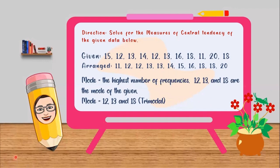Next, let's find out the mode. Mode is the highest frequency. In an arranged data, we can easily see which values appears the most, right? So we can easily identify that 12, 13, and 18 appears the most.